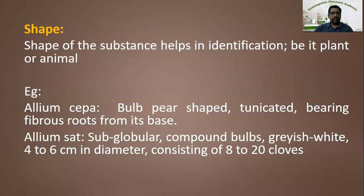The shape of a substance helps in the identification of a plant or animal. For example, Allium cepa — the bulb is pure shape. Allium cepa is nothing but onion, tunicated, bearing fibrous roots from its base. Allium sativum has a slight difference from Allium cepa. Allium sativum is nothing but garlic — it is a sub-globular compound bulb, grayish white, 4 to 6 centimeters in diameter, consisting of 8 to 20 cloves in the bulb.